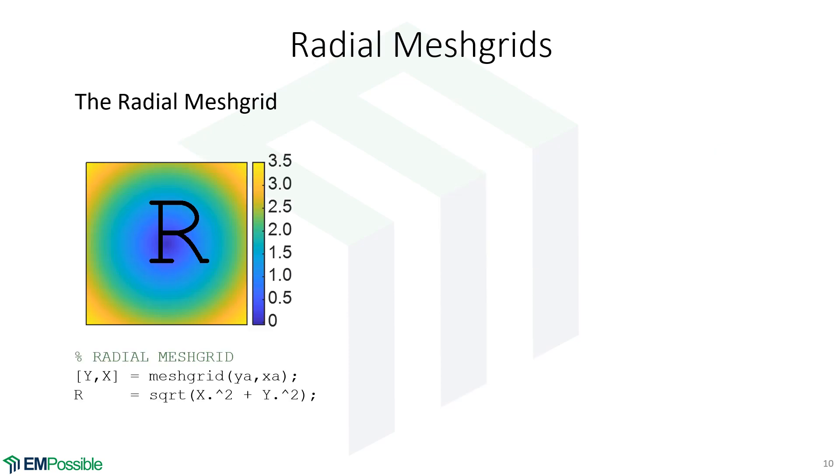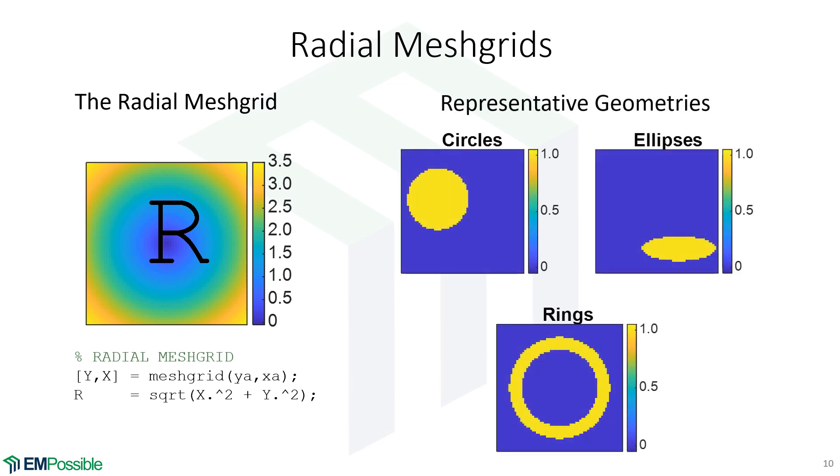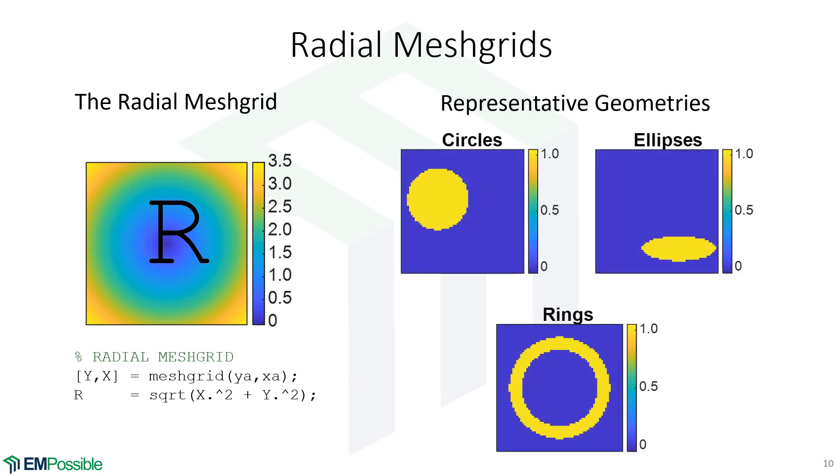There's radial meshgrids, which we actually did an example of. We do the x squared plus y squared trick to get a grid that starts at zero at some place and increases with radius away from that point. In this case I have it centered. Radial grids are used for making circles - we can even offset the circle, control its radius. More generally, we can make ellipses, control the radius left and right, up and down, and control positions. We can make rings and other structures - all done with radial meshgrids.